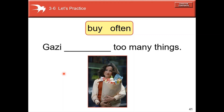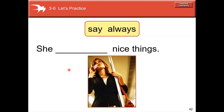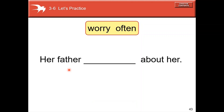Let's fill in the gaps using the words in the box. Good job — 'she always says nice things.' And be careful with the ending -y here: 'Her father often worries about her.' Notice the change from 'worry' to 'worries' — y to i, then add -es, because the letter before y is a consonant.